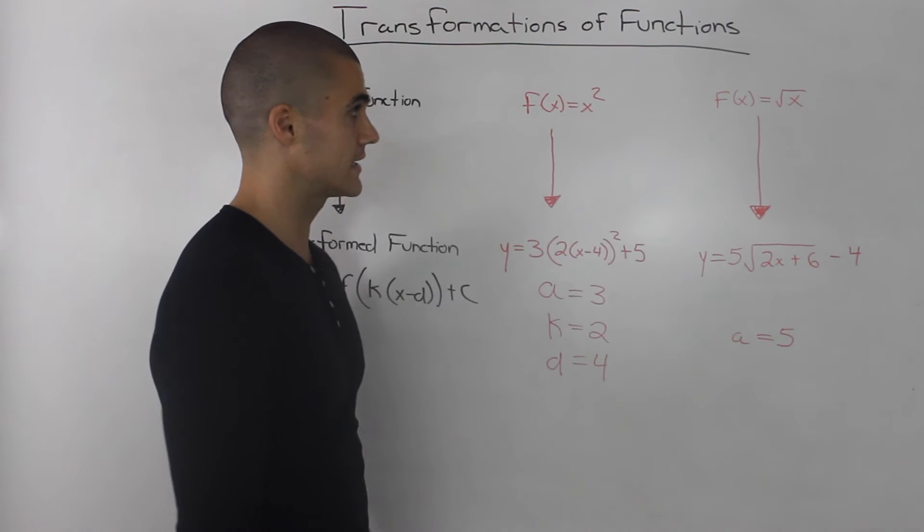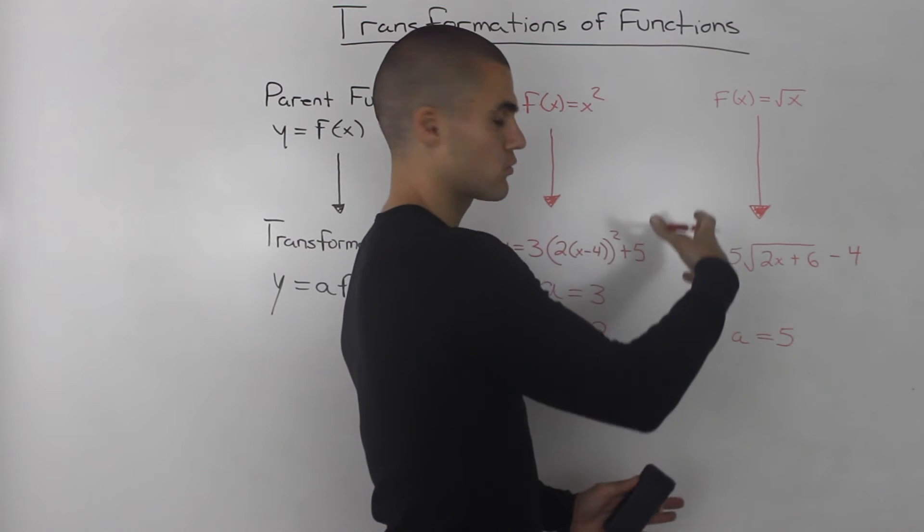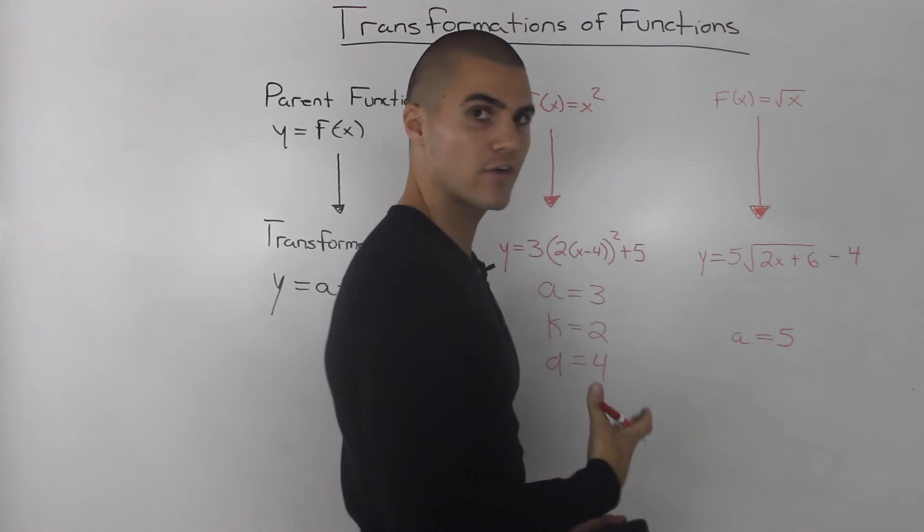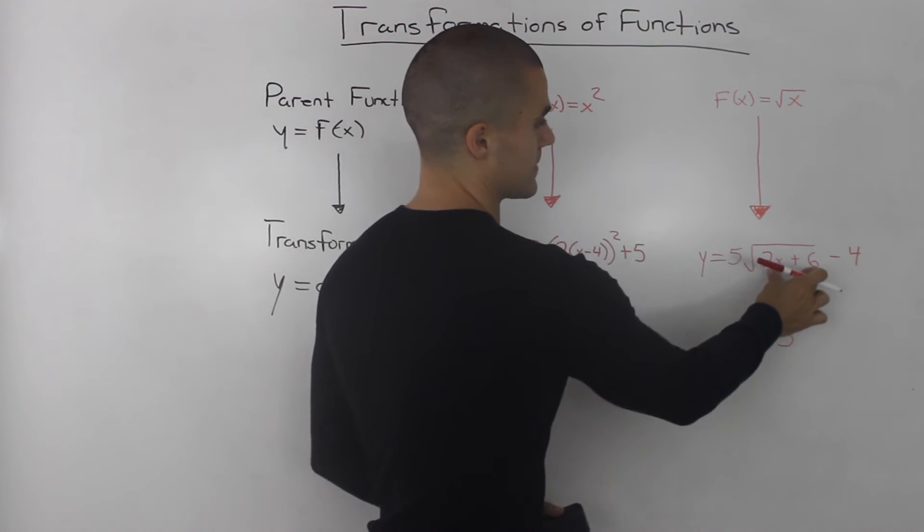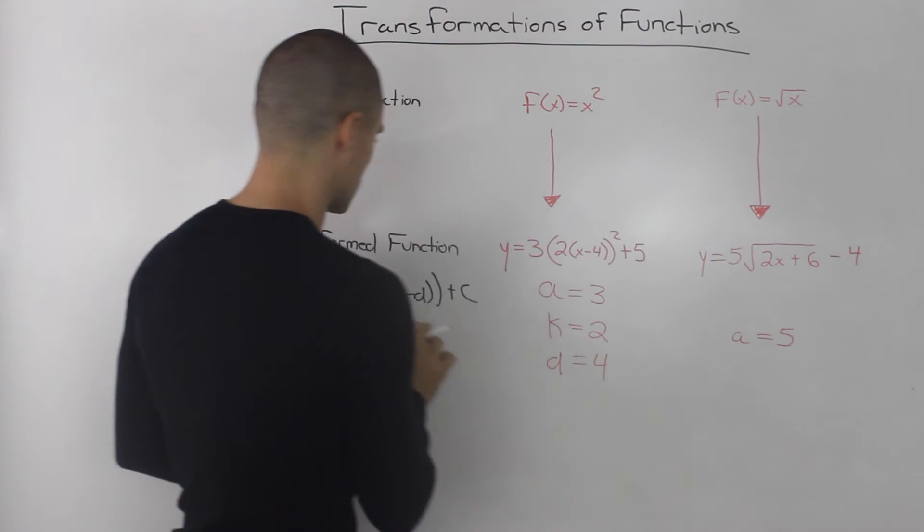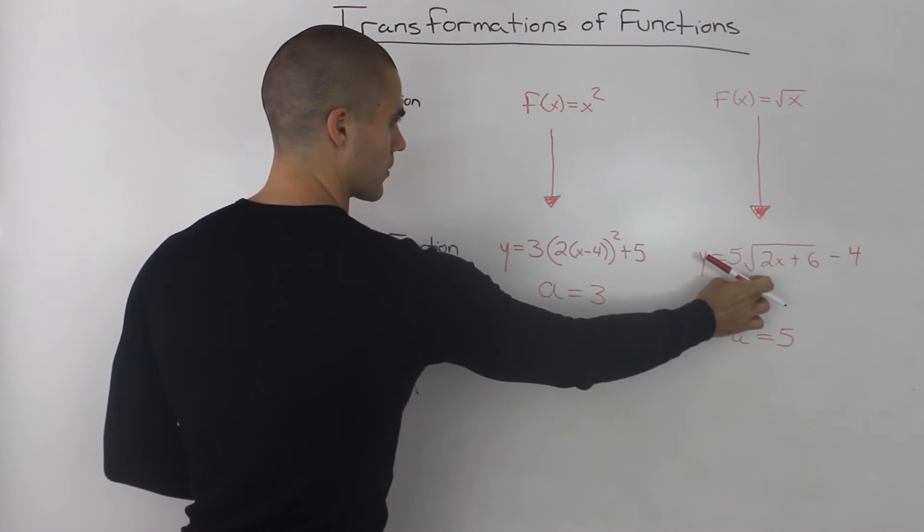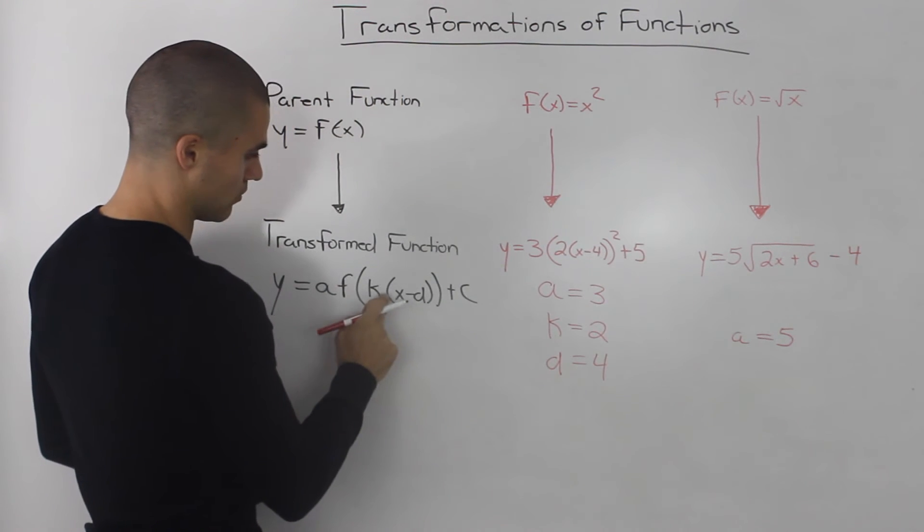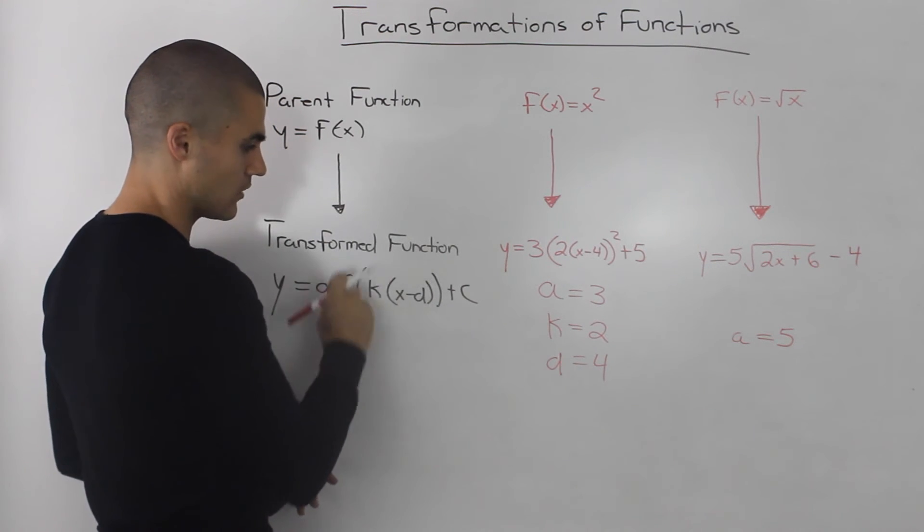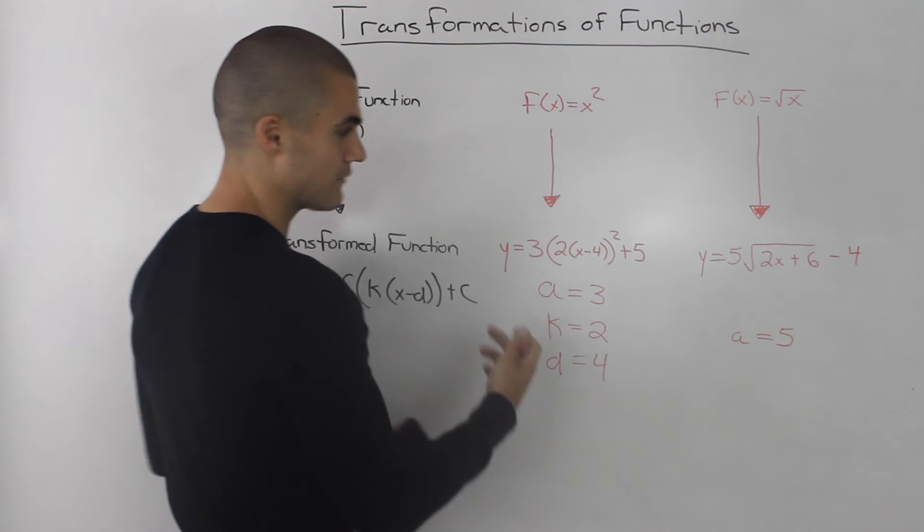Now moving on to our second example, notice how for the x value in the square root function, we subbed in this 2x+6. However I added a little trick in there because this 2x+6, even though we subbed in that expression for the x value, so it should correspond to this k(x-d), it's not in the same form. Because notice how the x is by itself, there's nothing in front of it. We factored out a k from this x-d expression. So we have to do the same thing here.